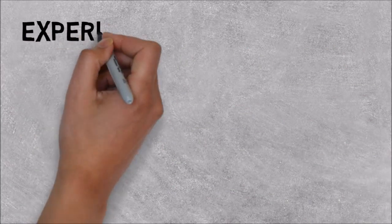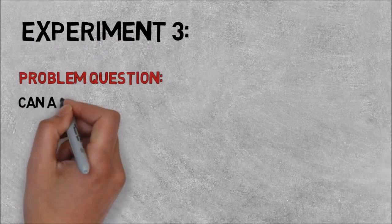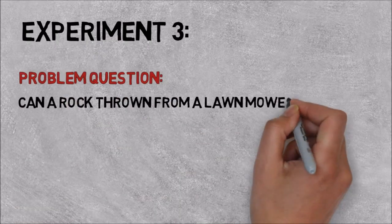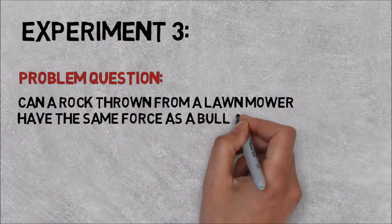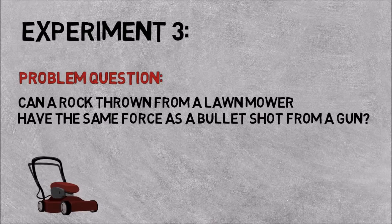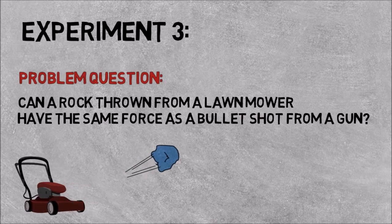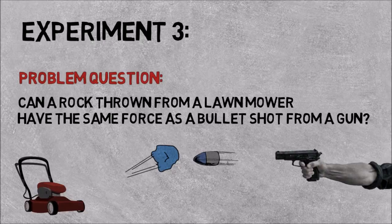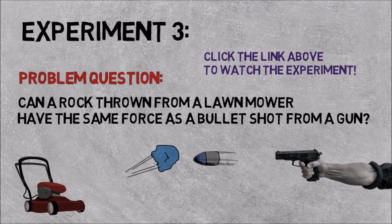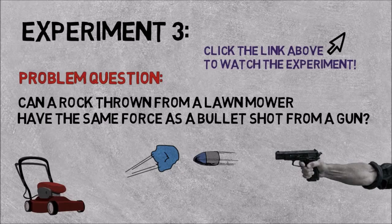Let's go to experiment three. Can a rock thrown from a lawnmower have the same force as a bullet shot from a gun? Anyone that's mowed a lawn is aware that a rock and other material can be shot with a lot of energy from a running lawnmower. It has been said that rocks shot from a lawnmower can have a force equal to a bullet shot from a gun. So the Mythbusters actually set up an experiment to determine if a rock shot from a lawnmower can have the same energy as a bullet shot from a gun. Click on the link and come back to take the quiz.